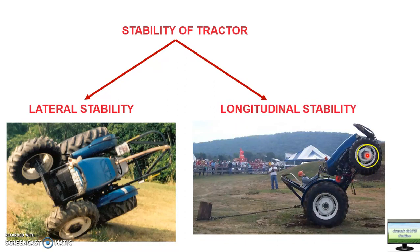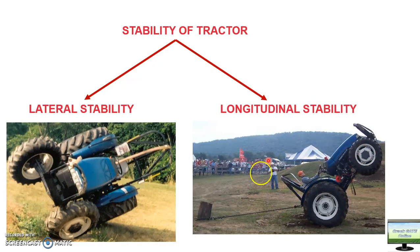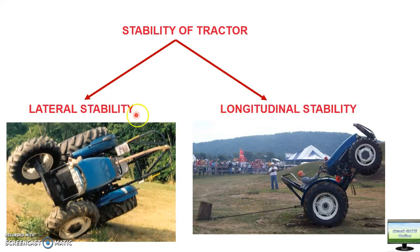The second type is longitudinal stability, which is the most common. You may have seen a tractor on the road where the front wheel gets lifted and the tractor turns over backward. This photo shows an experiment being conducted for longitudinal stability of a tractor.